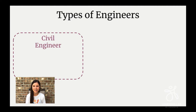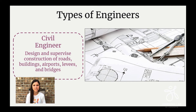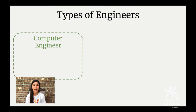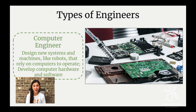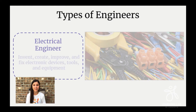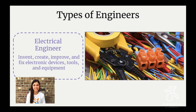Another type of engineer is a civil engineer. Those engineers design and supervise the construction of roads, buildings, airports, levees, and even bridges — things we use every single day. Another type of engineer is a computer engineer. They develop new computer hardware and software, and they can also design new systems and machines, like a robot that would rely on a computer to operate. Electrical engineers invent, create, improve, and fix the many types of electronic devices we use all the time, like tools or other types of equipment.